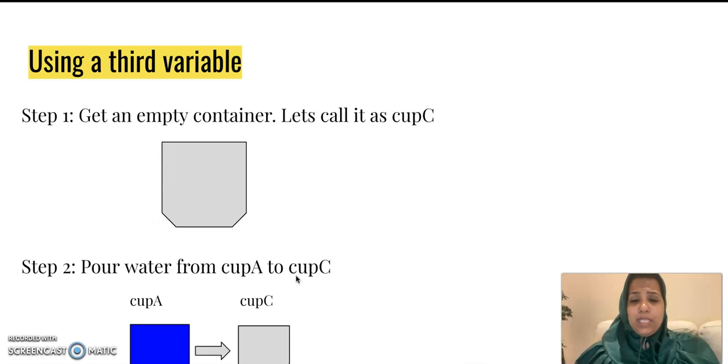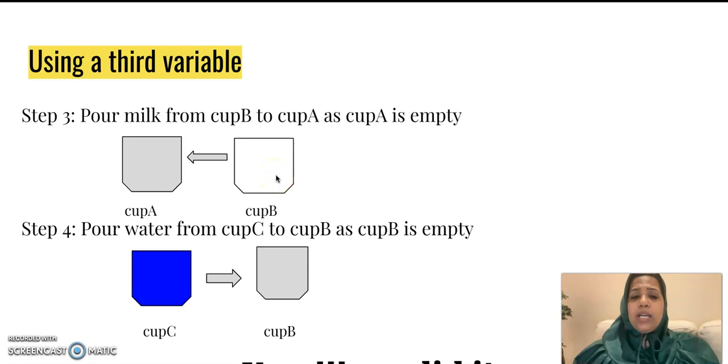Just get an empty container or a third variable. Put the contents of one cup into the third one, so that it gets empty. Pour the contents of the second cup into the first one, so that the second one now is empty. And finally pour the contents from the third cup into the second one. And that's it, it's done. Next time you have a confusion, you can easily draw these cups, and you can remember how to do it.